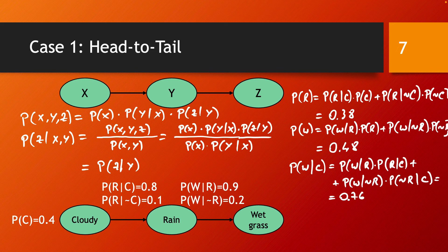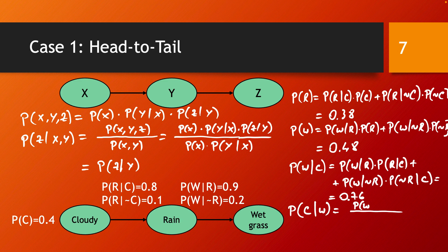We can also do diagnostic reasoning and propagate evidence back throughout the network using Bayes' rule. For example, if we see that the grass is wet, we can ask: what is the probability that the weather was cloudy that day? This is the conditional probability P(C|W), and applying Bayes' rule gives P(W|C) times P(C) divided by P(W). We have all we need to calculate this, and it ends up being 0.65.